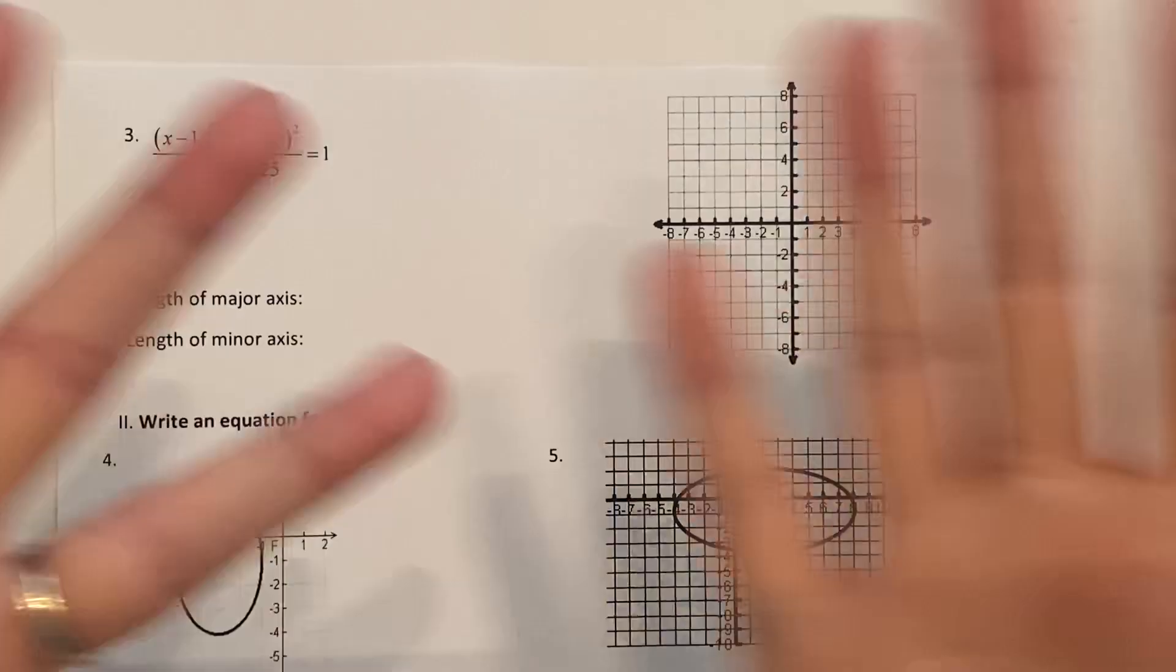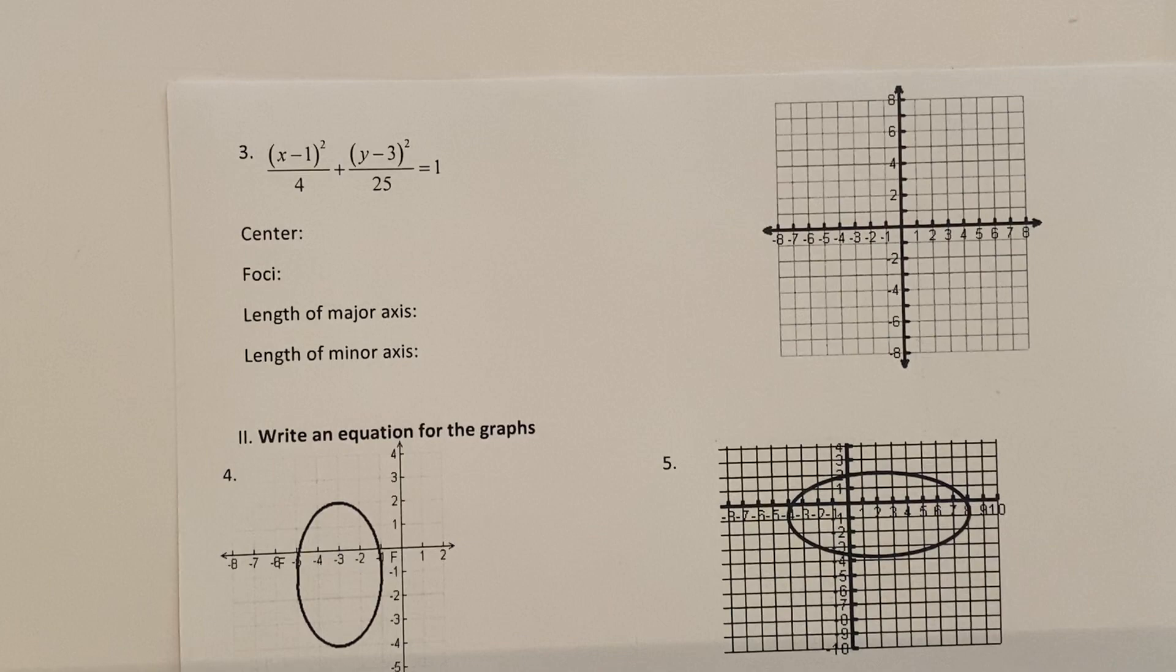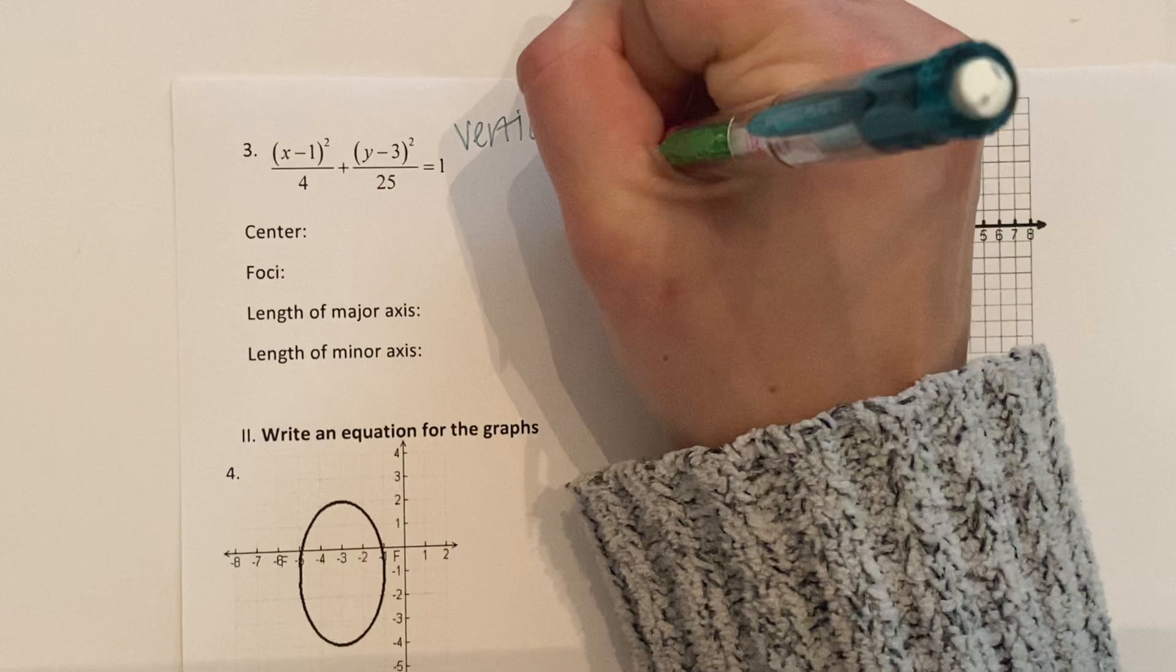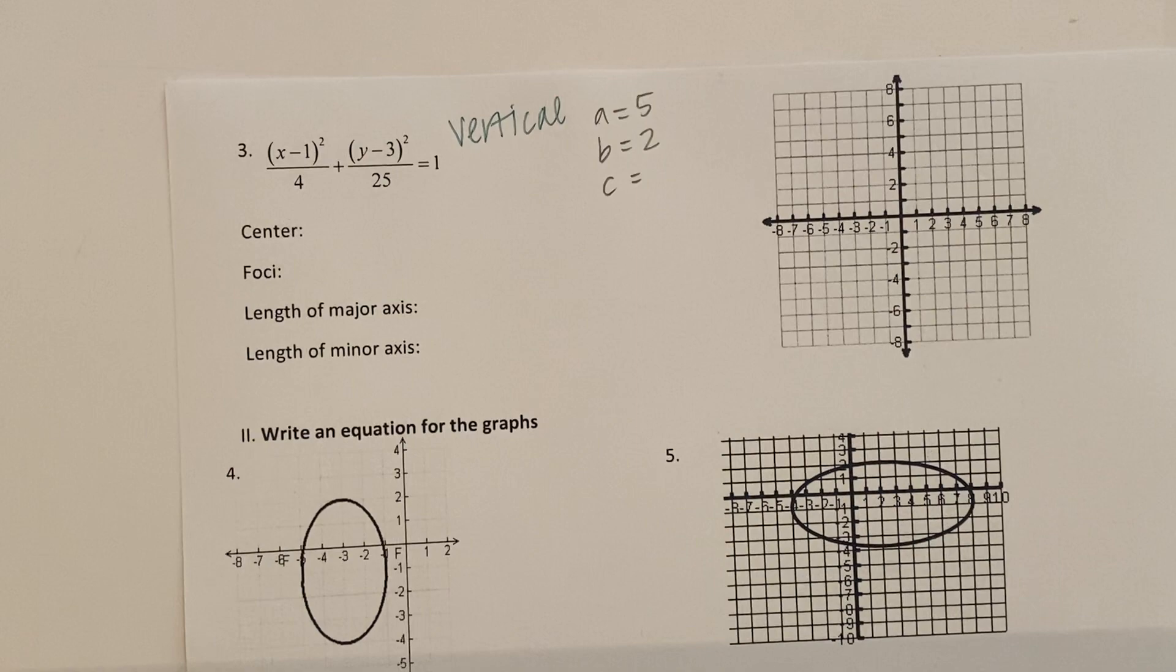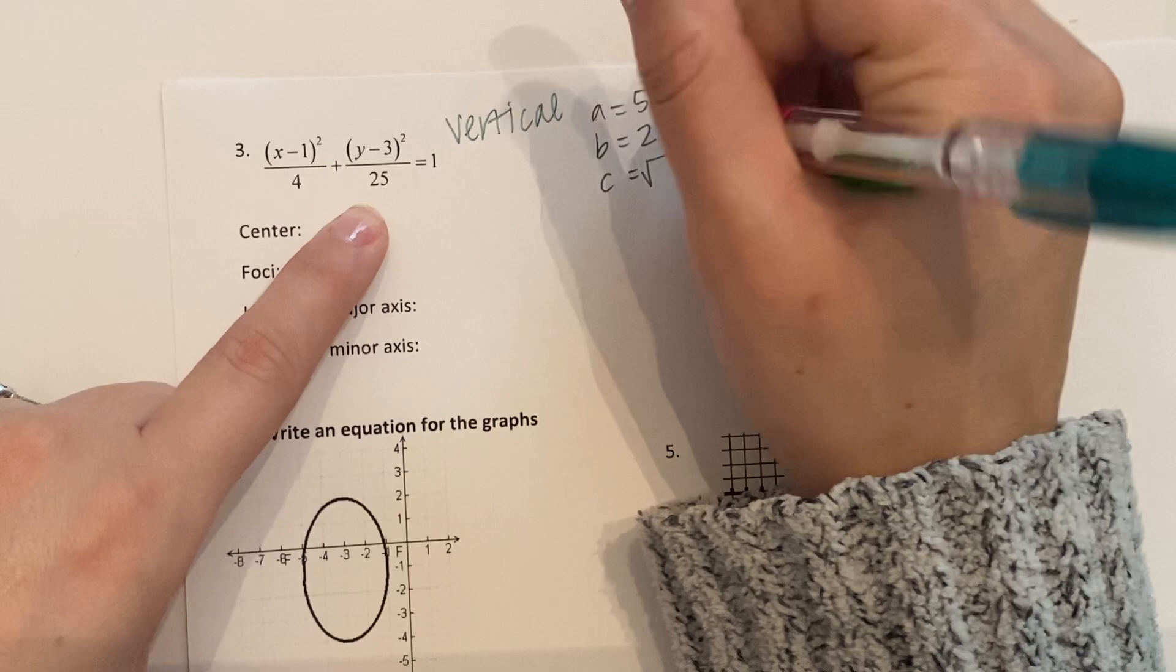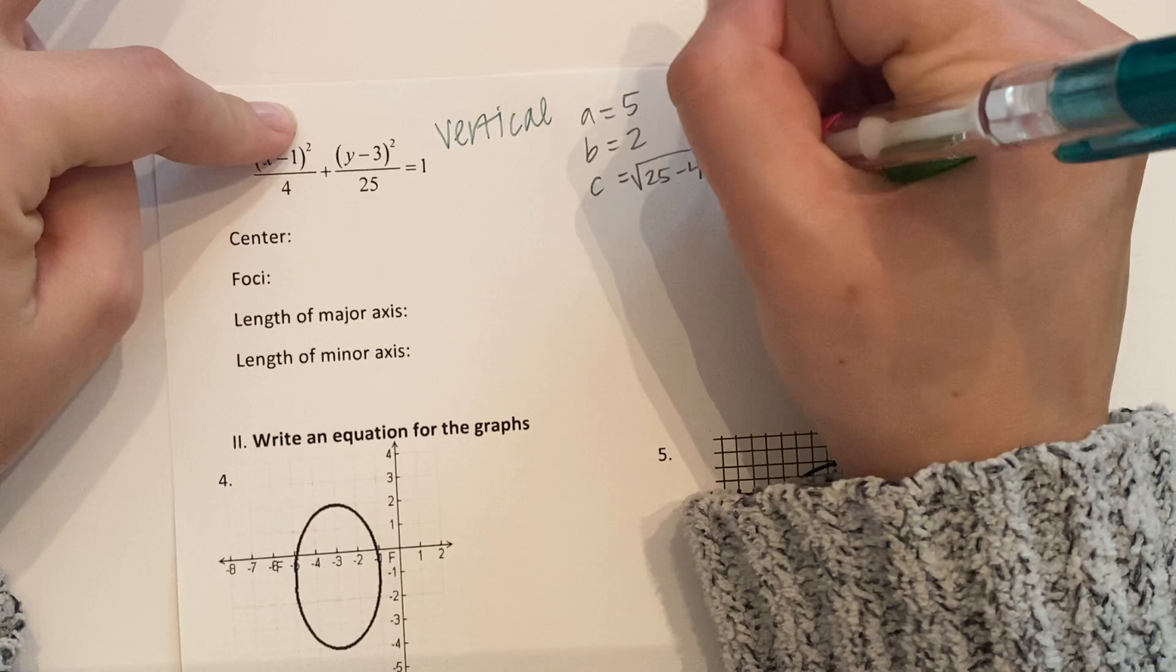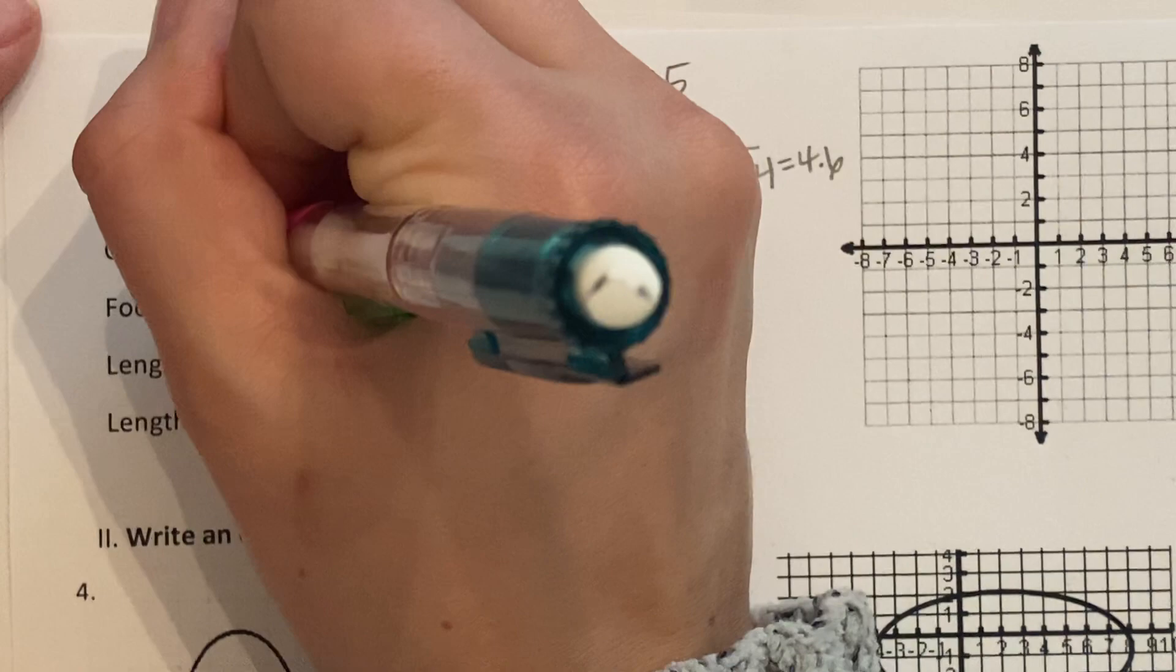Okay. Welcome back. Let's check our answers. So hopefully you looked for the bigger number first, saw that it was under Y and said, Hey, it's vertical. You solve for A, B and C. You got A to be 5, B to be 2. And then for C, you did your little formula. 5 squared is 25 minus 2 squared is 4. And then you notice that's not a beautiful number. You could do the square root. Maybe you said that's about 4.6.